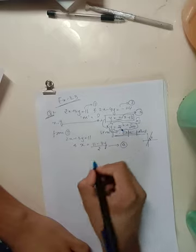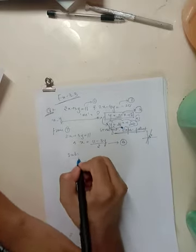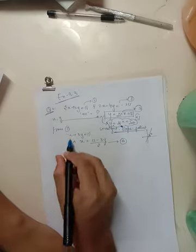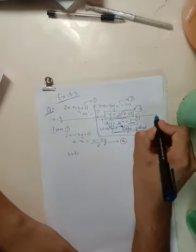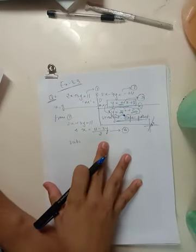This implies that x equals 11 minus 3y upon 2. This could be called as equation a. And substituting, remember students or my dear friends that writing all these things as written, you have to go in this manner only with this proper spacing.